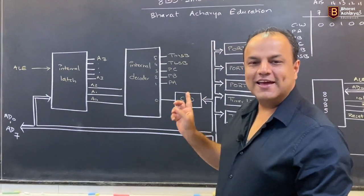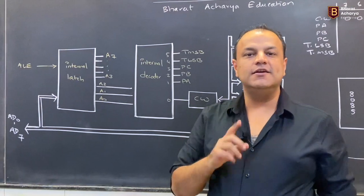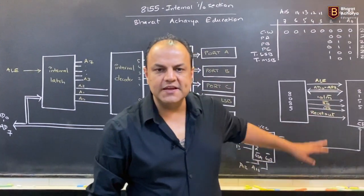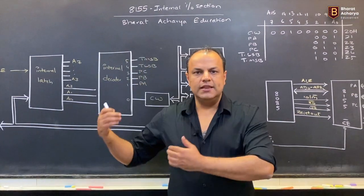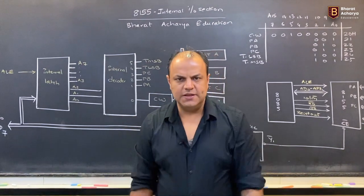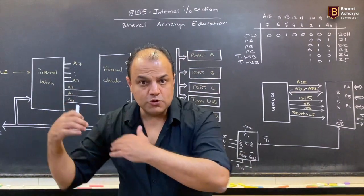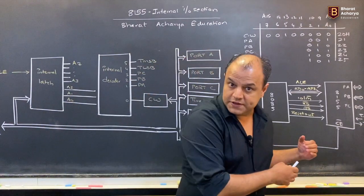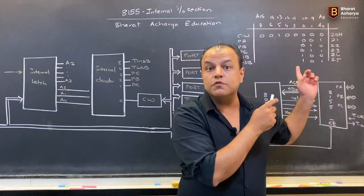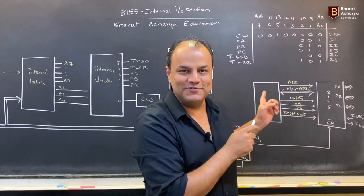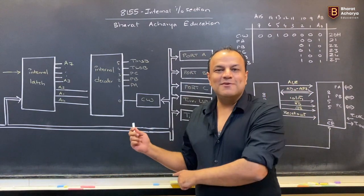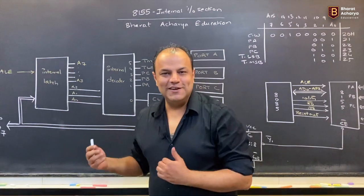This particular diagram is called the internal IO section of 8155. More than asking about interfacing, they mainly ask this diagram in the exam. We're going to start with interfacing because to understand this diagram you have to first understand the map, figure out the decoding, and then come inside this diagram and learn it.